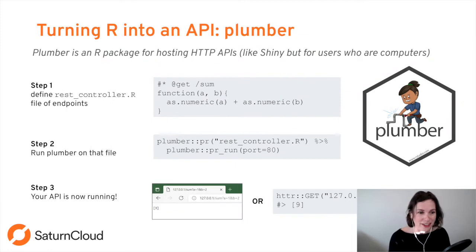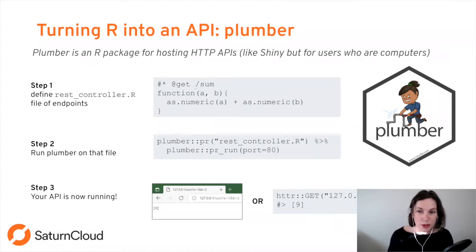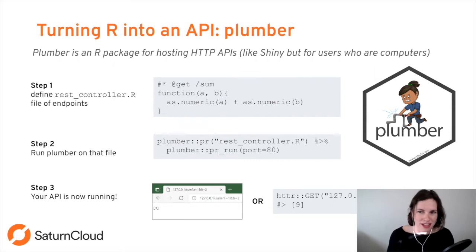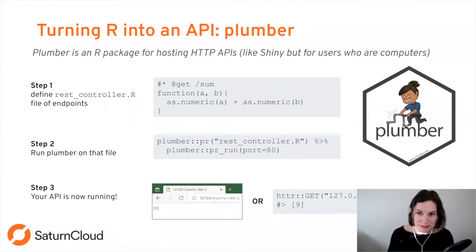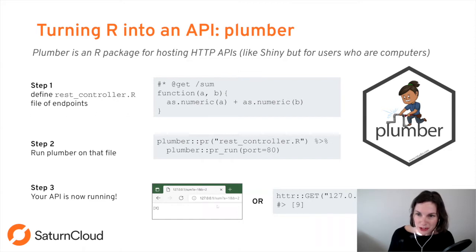Plumber, originally developed by Jeff Allen and now under RStudio, is basically: what if Shiny, but the users aren't humans, they're computers. The Plumber package is super easy to use. You make a file, call it something like rest_controller, and put the endpoints you want your API to have. If you want /sum to sum two numbers, you add a comment declaring the GET request and a function to add two numbers. Then you tell Plumber to run that file on port 80, and you can immediately access the API in your browser or via httr.